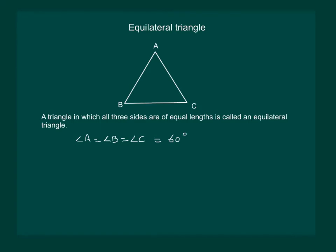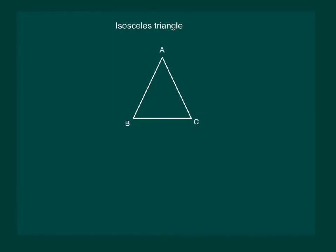Hence, we conclude that in an equilateral triangle, all the sides are equal and all three angles are equal, and the measure of each angle is 60 degrees. Now consider isosceles triangle ABC.